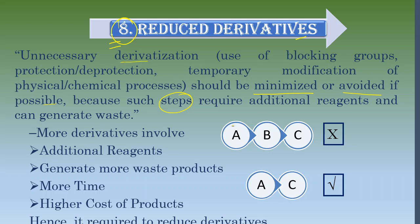Let's say you have raw material A and you need product C. But what you are doing is converting A to B, and then using B to convert it into C. Principle 8 says you should directly try to convert A to C. Making B as an intermediate byproduct is unnecessary derivatization — you make a derivative of A to get B, then B to C. We normally do this when using blocking groups or protection and deprotection steps.